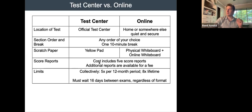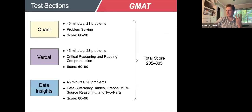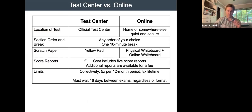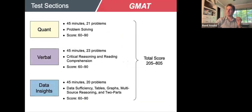The cost of the test includes five score reports — covering the sectional scores and overall score. Additional detailed reports are available for purchase, allowing you to drill down by question topic and question type for more data. You can take the GMAT five times in a 12-month period and must wait 16 days between tests.